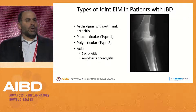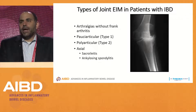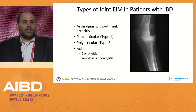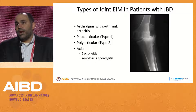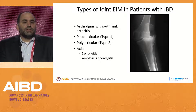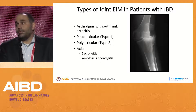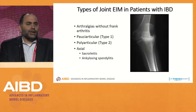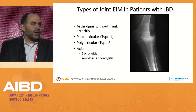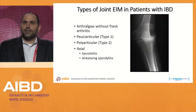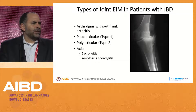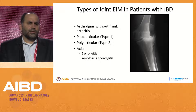Starting with peripheral arthritis: the types of joint pain our patients can get are joint extra-intestinal manifestations. Most common, far and away, are arthralgias without frank joint swelling. There's the pauciarticular or type 1 arthritis, polyarticular or type 2 arthritis, and of course the axial arthritis — sacroiliitis and ankylosing spondylitis. Interestingly, rheumatology colleagues typically just call it inflammatory arthritis associated with IBD, rather than separating it as we do in our literature.